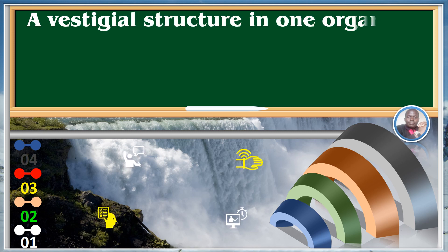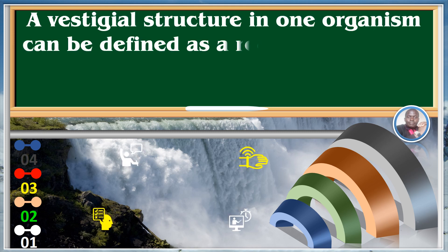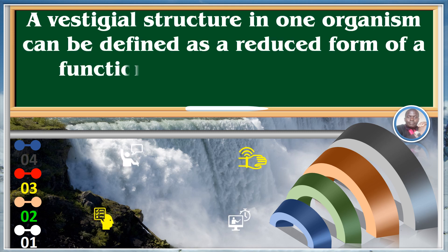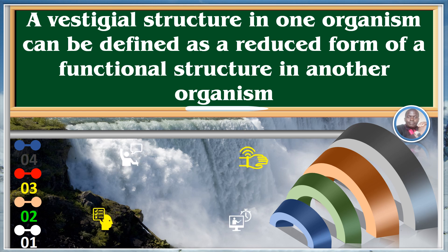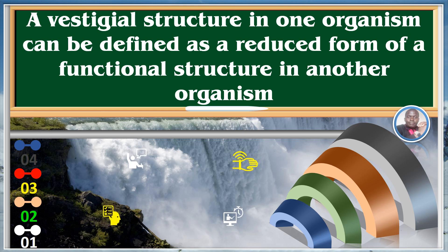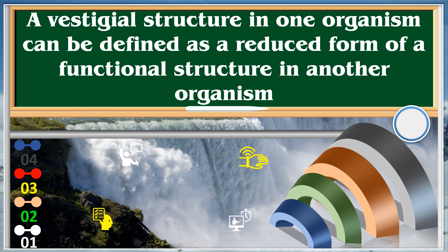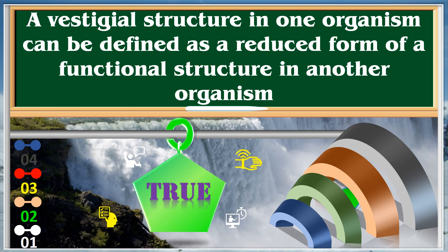A vestigial structure in one organism can be defined as a reduced form of a functional structure in another organism. True.